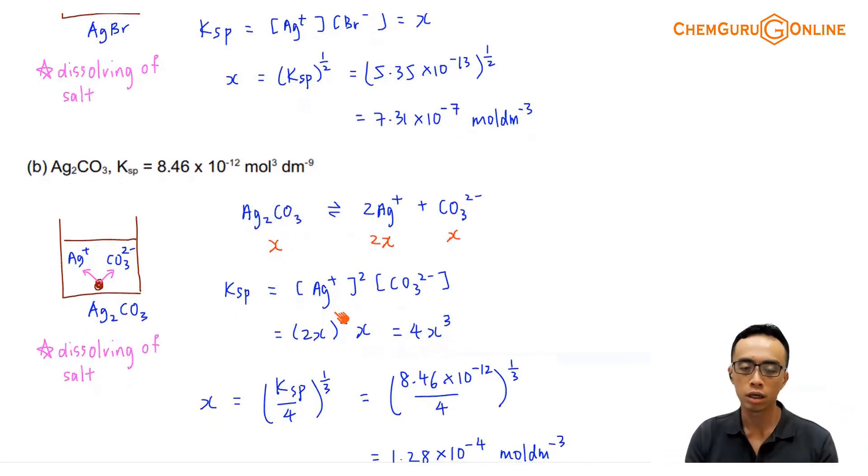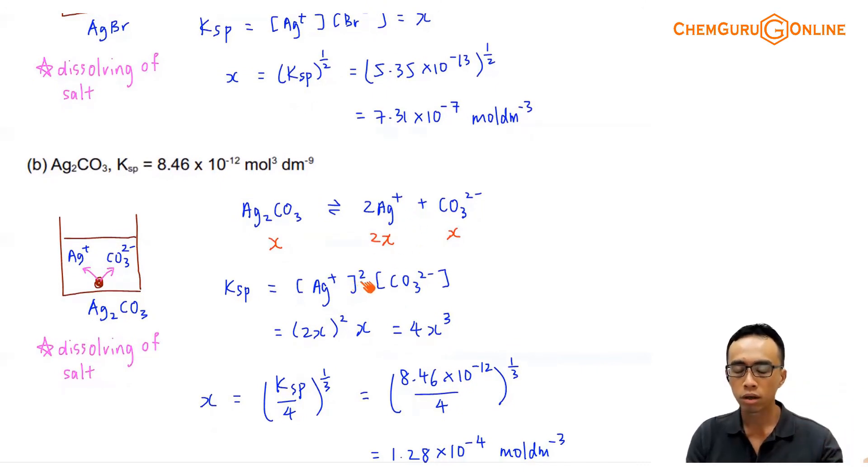So my Ksp, same thing, Ag+ squared, because I have 2 of them. Then carbonate concentration. So Ag+ is 2X, so this would be 2X squared. Then carbonate, the coefficient is 1, so this would be X.